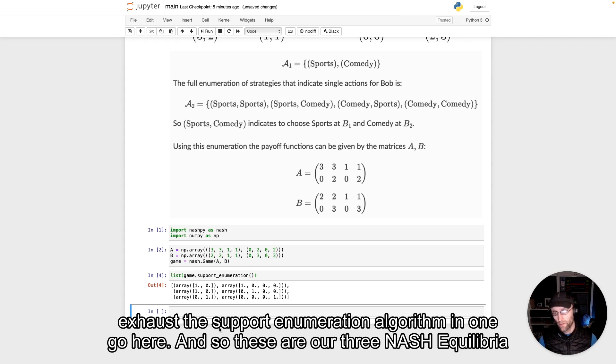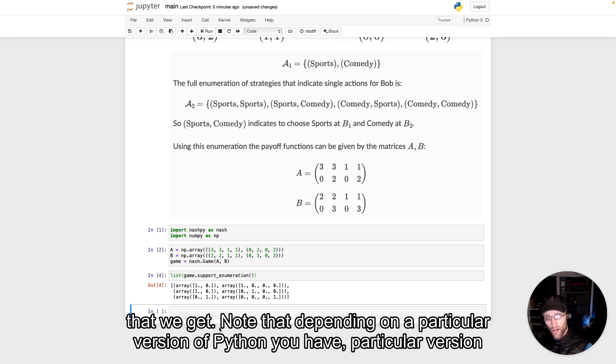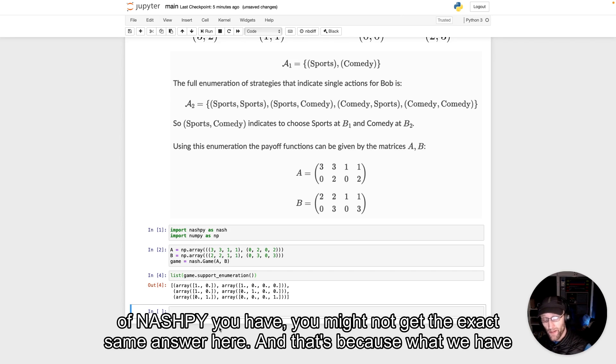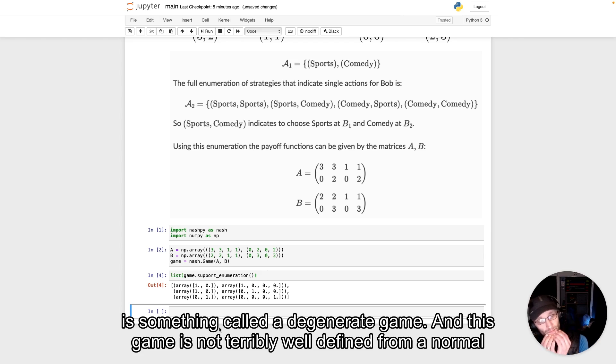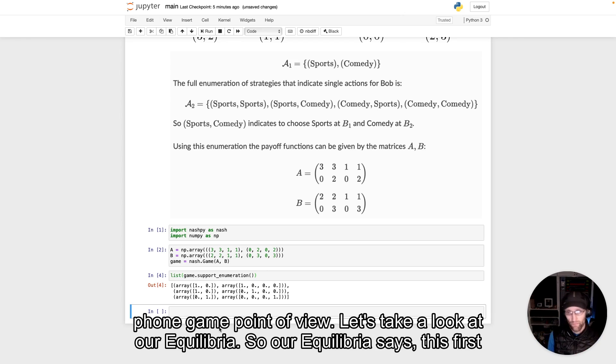And so these are our three Nash equilibria that we get. Note that depending on a particular version of Python you have, particular version of NashPy you have, you might not get the exact same answer here. And that's because what we have is something called a degenerate game. And this game is not terribly well defined from a normal form game point of view.